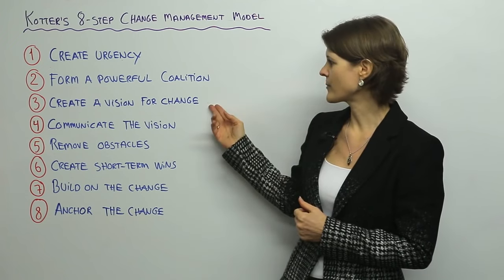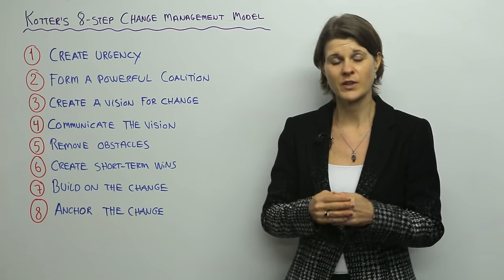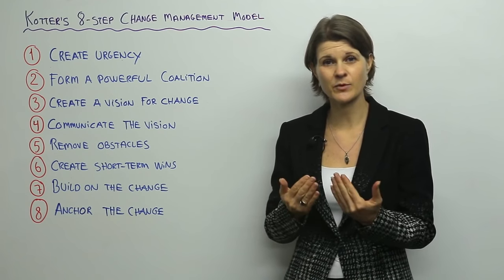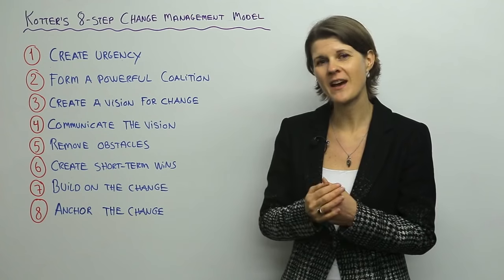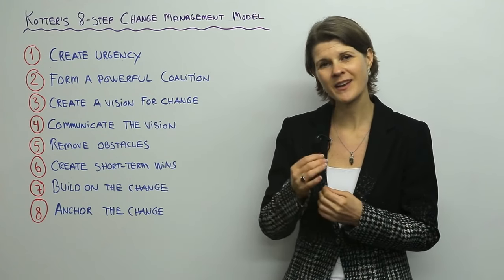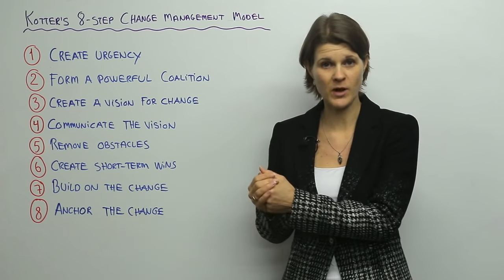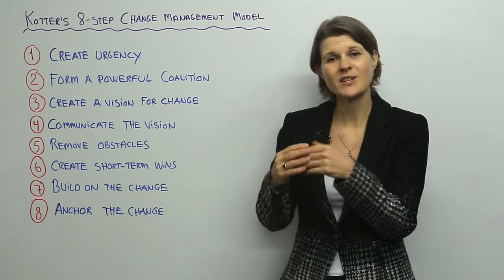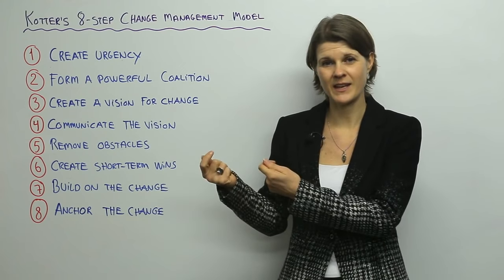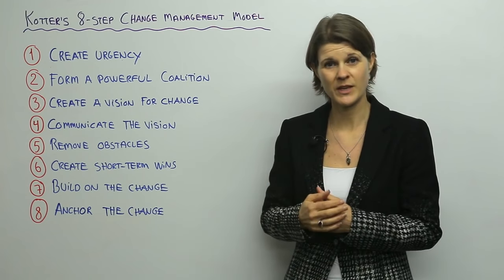Thirdly, he talks about creating a vision for change. The vision must be short, clear, and understandable, and preferably have an emotional element and a creative element, because we want the vision to be easily understood by the people who are affected by the change. Change can be emotional, hence we want to communicate in that way. We want the vision to be relevant to the people who hear it.